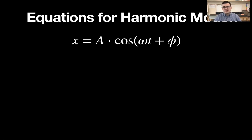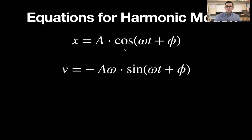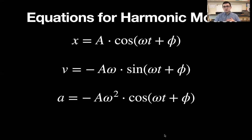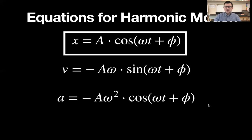Once we have an actual problem, we can substitute in numbers for phi and it simplifies. But while talking theoretically without a specific problem, we have to include the phi. If we take the derivative of that, we get the velocity function — remember, the derivative of cosine is negative sine, and don't forget to take the derivative of the inside, which is how we get omega out front. One more derivative gives us the acceleration function. The position equation is on your formula sheet, so we can just take the derivative twice to find acceleration or once to find velocity.